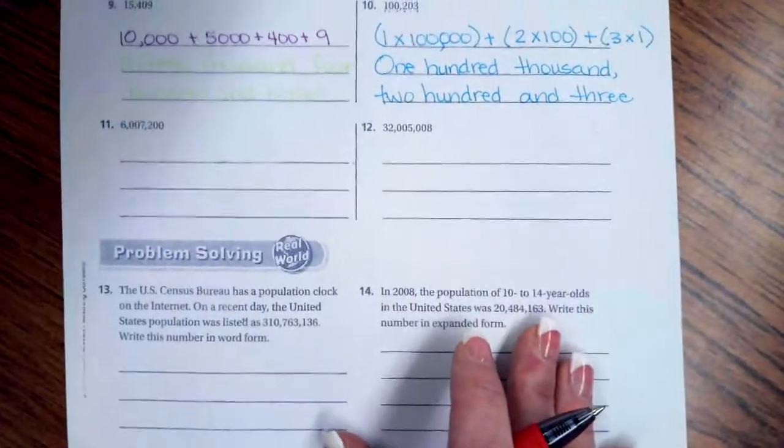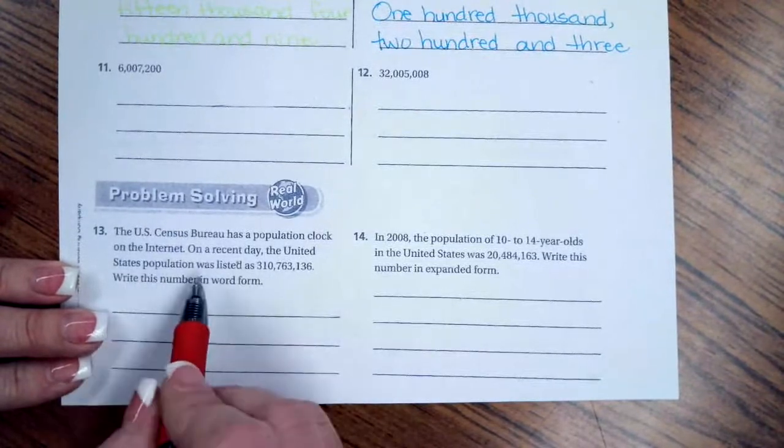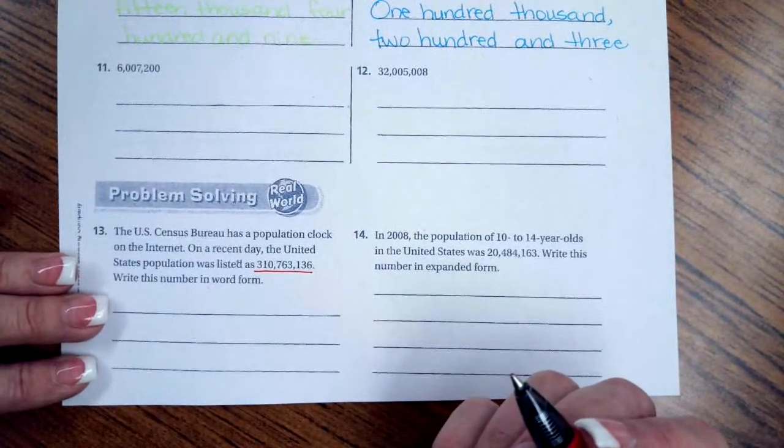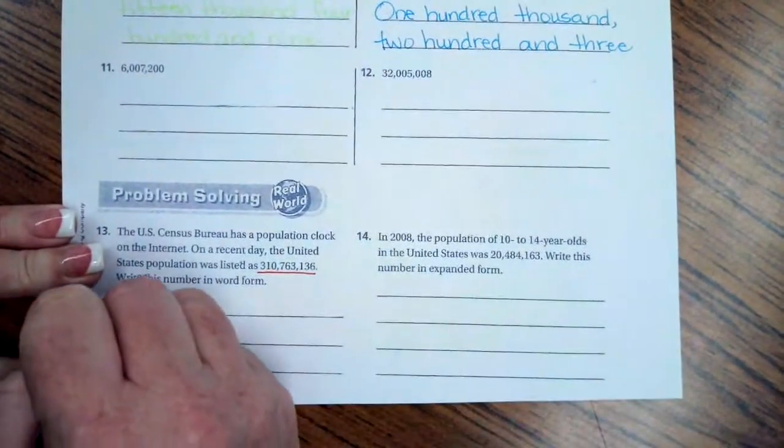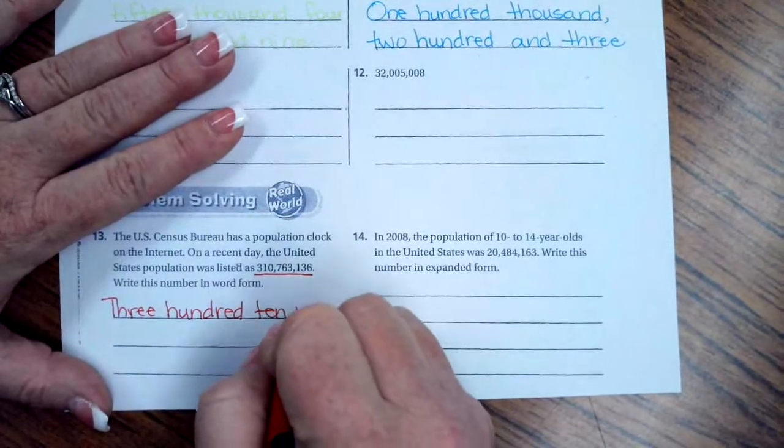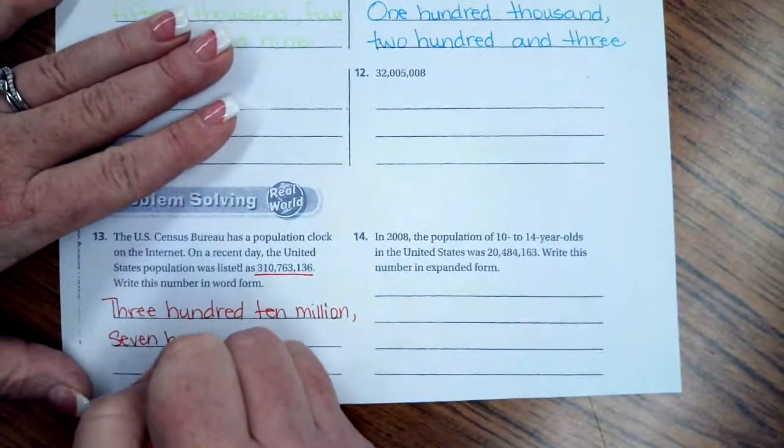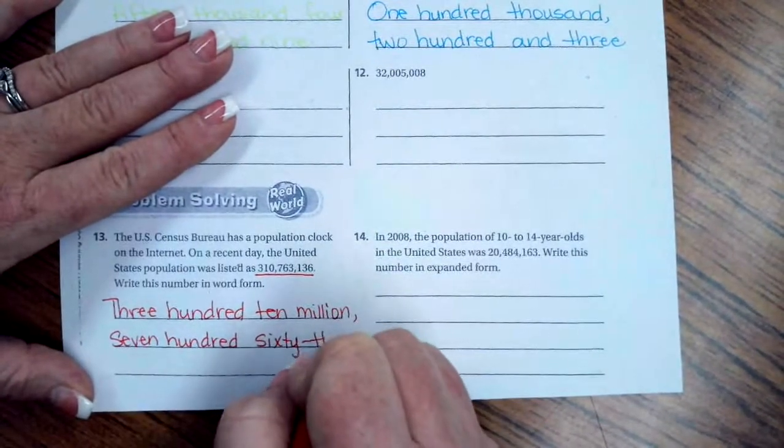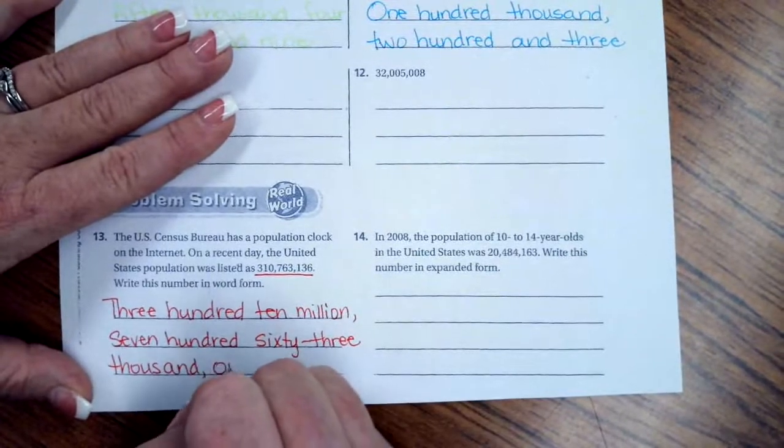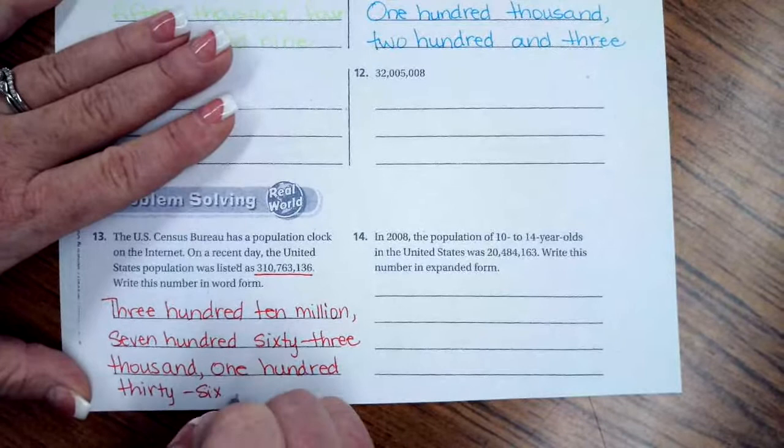We're going to go down and do number 13. Number 13 says the U.S. Census Bureau has a population clock on the internet. On a recent day, the United States population was listed as 310,763,136. Write this number in word form. So that's what we're going to do. 310,000,000, 763,000, 136. There you go.